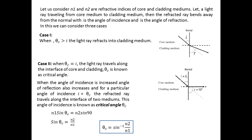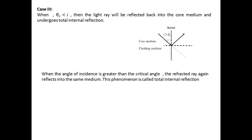From Snell's law, if you want to calculate the value of the critical angle — as I have explained in the previous slide, how light reflects back into the same medium — using Snell's law: N1 sin(θc), where θc is the critical angle at which the refracted ray travels through the interface between core and cladding. At the critical angle, the refracted angle equals 90°, so the equation becomes sin(θc) = N2 / N1, and therefore θc = sin⁻¹(N2 / N1). This is how you calculate the critical angle. And this is total internal reflection.